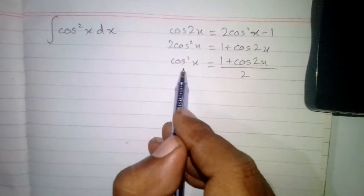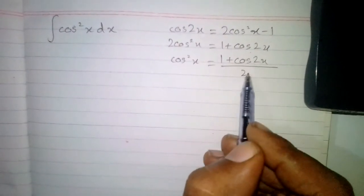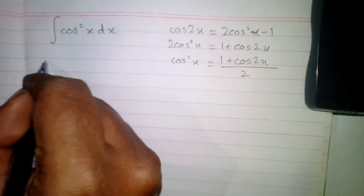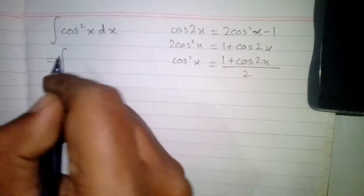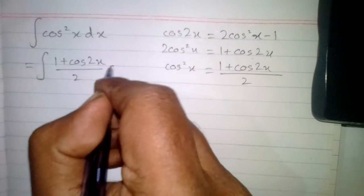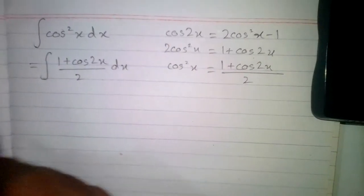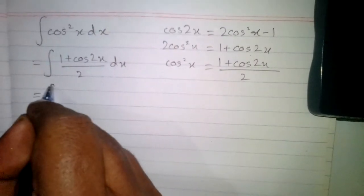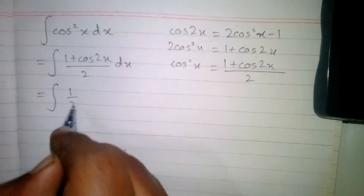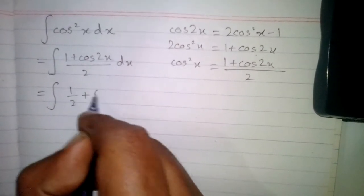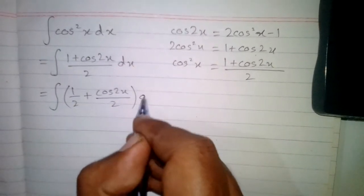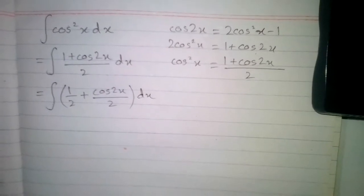Now we will substitute 1 plus cos 2x upon 2 in place of cos square x in the integral. So we have the integral of 1 plus cos 2x upon 2. We can break this fraction into two terms: one half plus cos 2x upon 2, with respect to x.